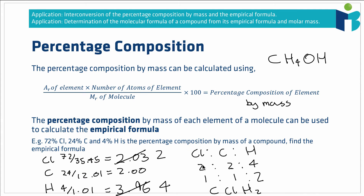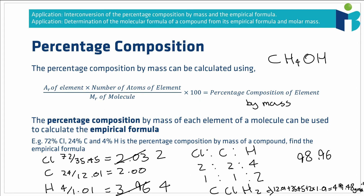We can't determine the molecular formula unless we're told the relative molecular mass of the compound. To find it, we first calculate the relative molecular mass of the empirical formula: the atomic mass of carbon plus chlorine plus two times hydrogen, giving 49.48 g/mol. If the molecular mass of the compound is exactly 49.48, the molecular formula equals the empirical formula. If it's 98.96 — twice the empirical mass — then the molecular formula is C₂Cl₂H₄.